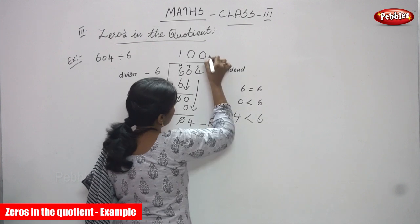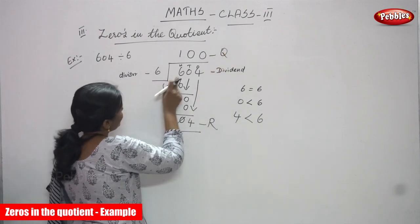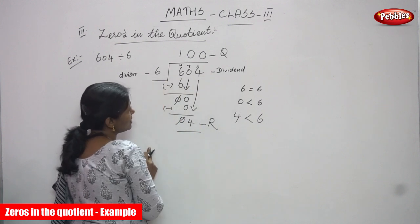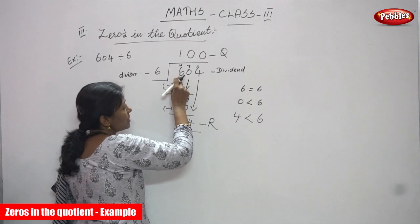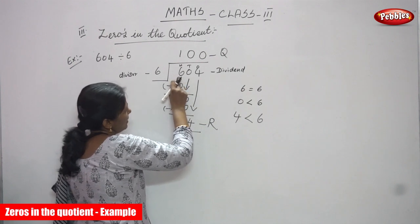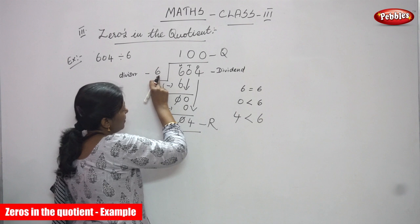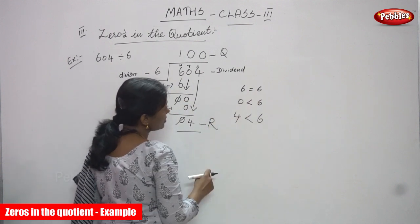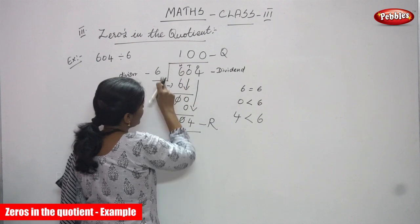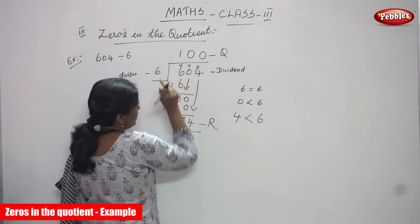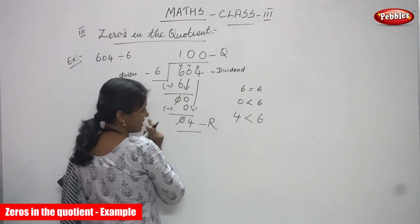So this is the remainder and this is the quotient. I will repeat once again. 604 is going to be divided by 6. First take 6 — that is the 100's place value. 6 is divided by 6. 6 equals 6, so 6 ones are 6. Use the 6th table: 6 ones are 6 — write 1 in the quotient. So 6 minus 6, you get 0. Cancel the 0.